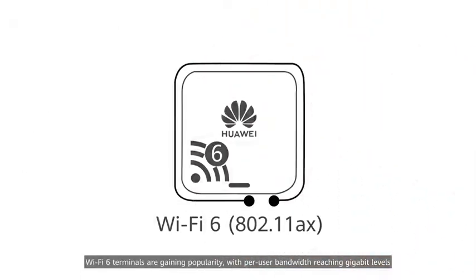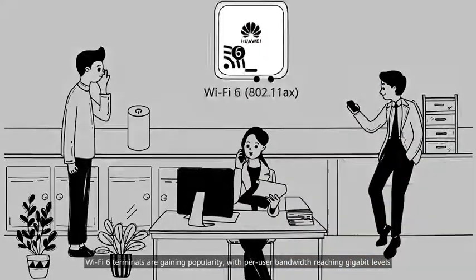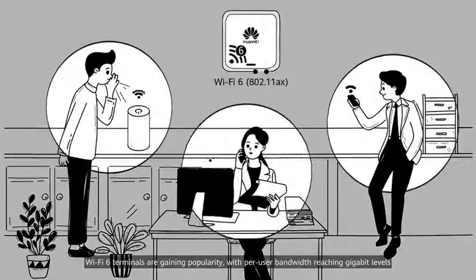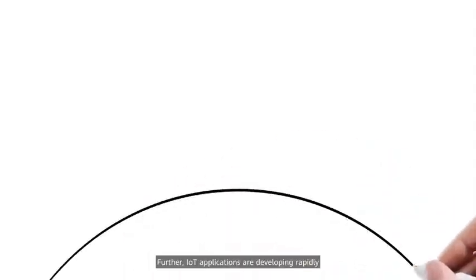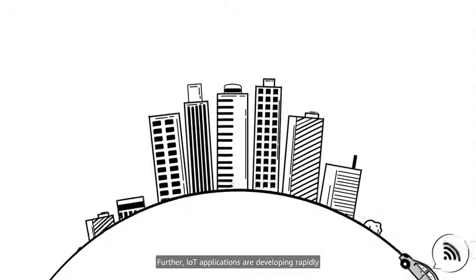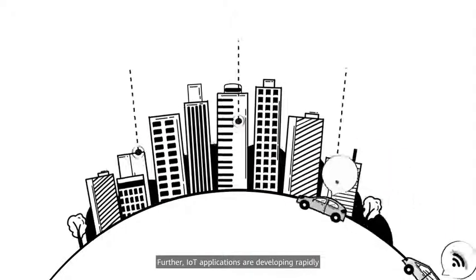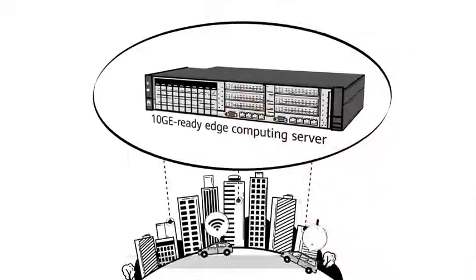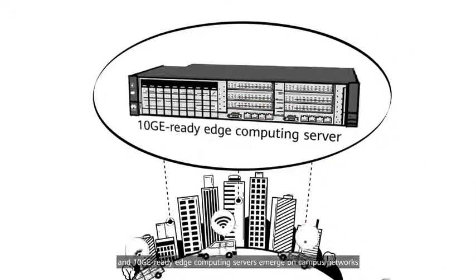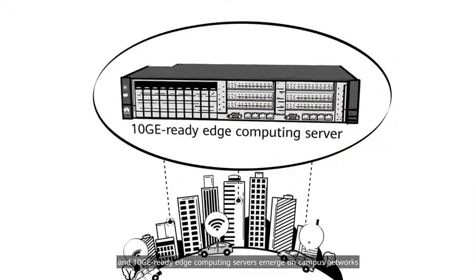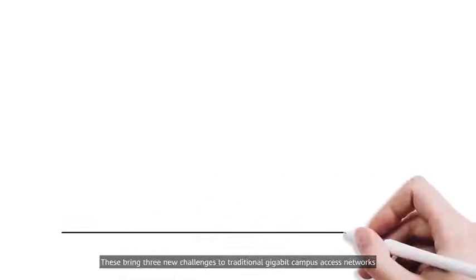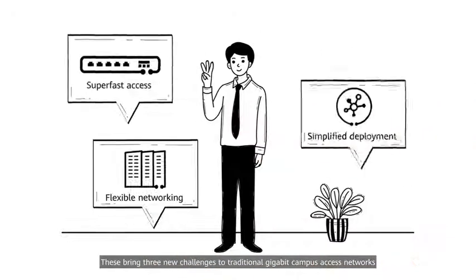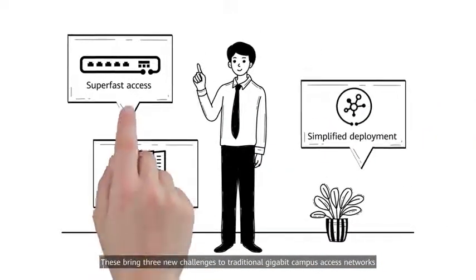Wi-Fi 6 terminals are gaining popularity, with per-user bandwidth reaching gigabit levels. Further, IoT applications are developing rapidly, and 10GE-ready edge computing servers emerge on campus networks. These bring three new challenges to traditional gigabit campus access networks.